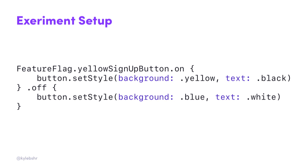For the sign-up button, it would be pretty simple, something like this. Feature flag is a class where we define static instances for each feature that we're testing. It provides two functions, .on and .off, which you pass a closure, and it'll call them based on whether the user is in your treatment — in this case the yellow sign-up button — or it'll call the off one if they're not. In the on closure, we style our button with the yellow background and black text. In the off closure, we set the blue background and white text for the current experience.